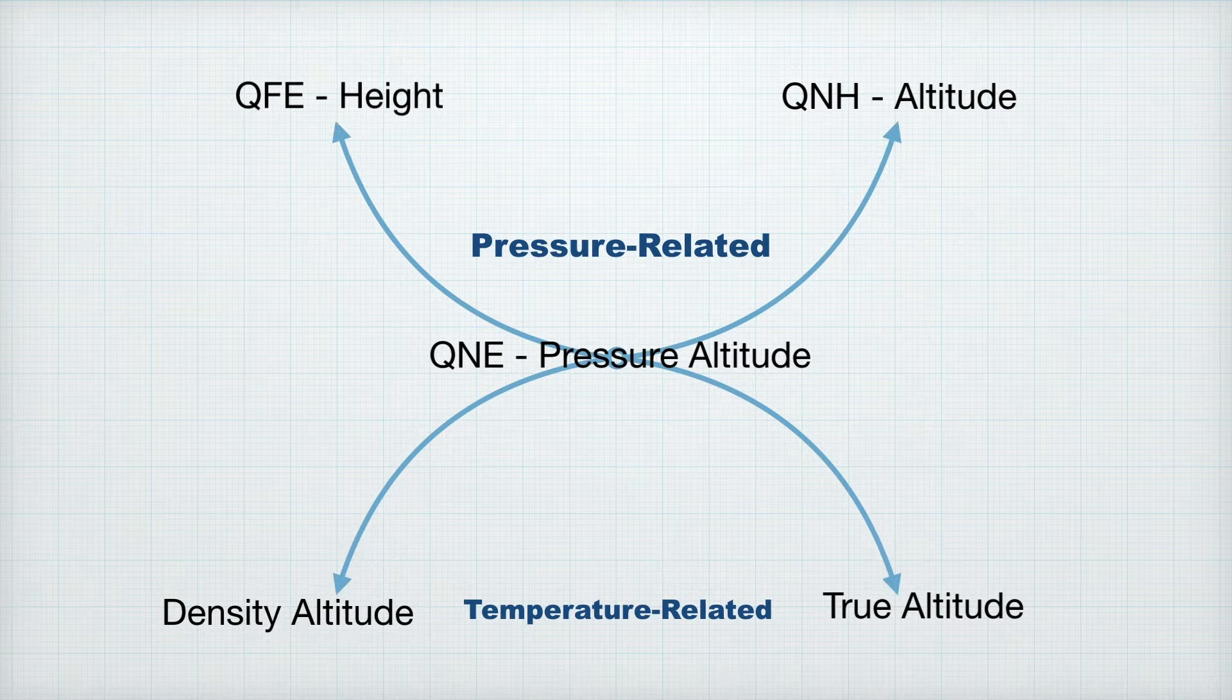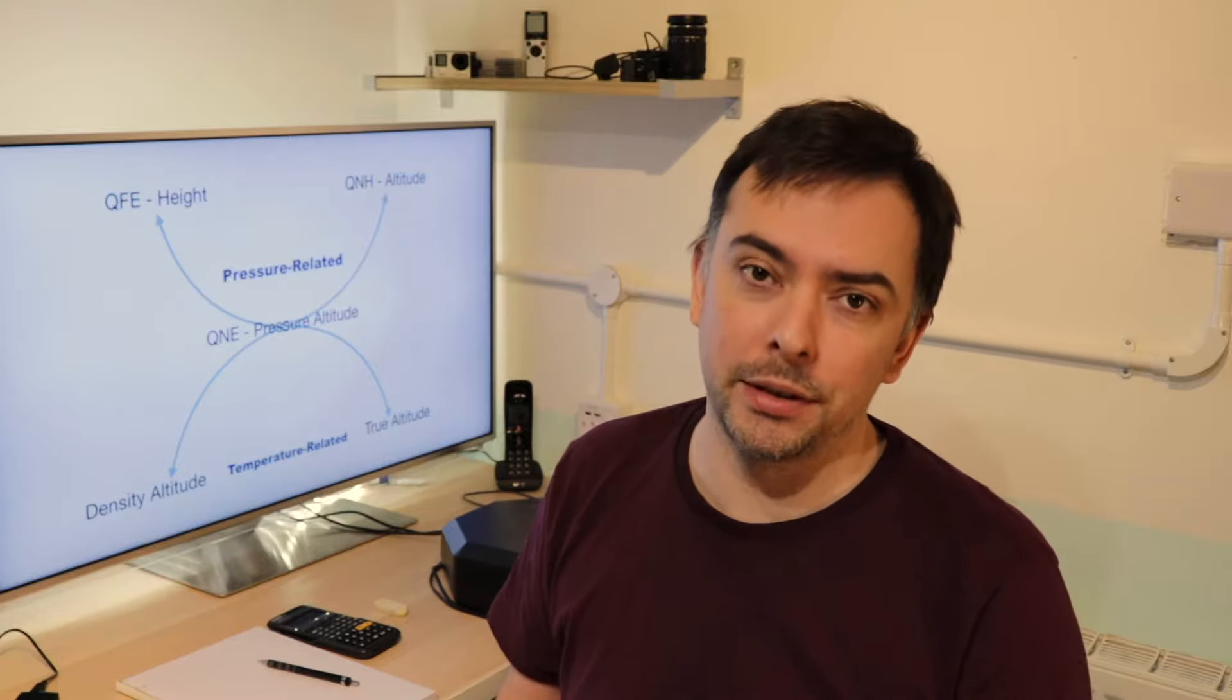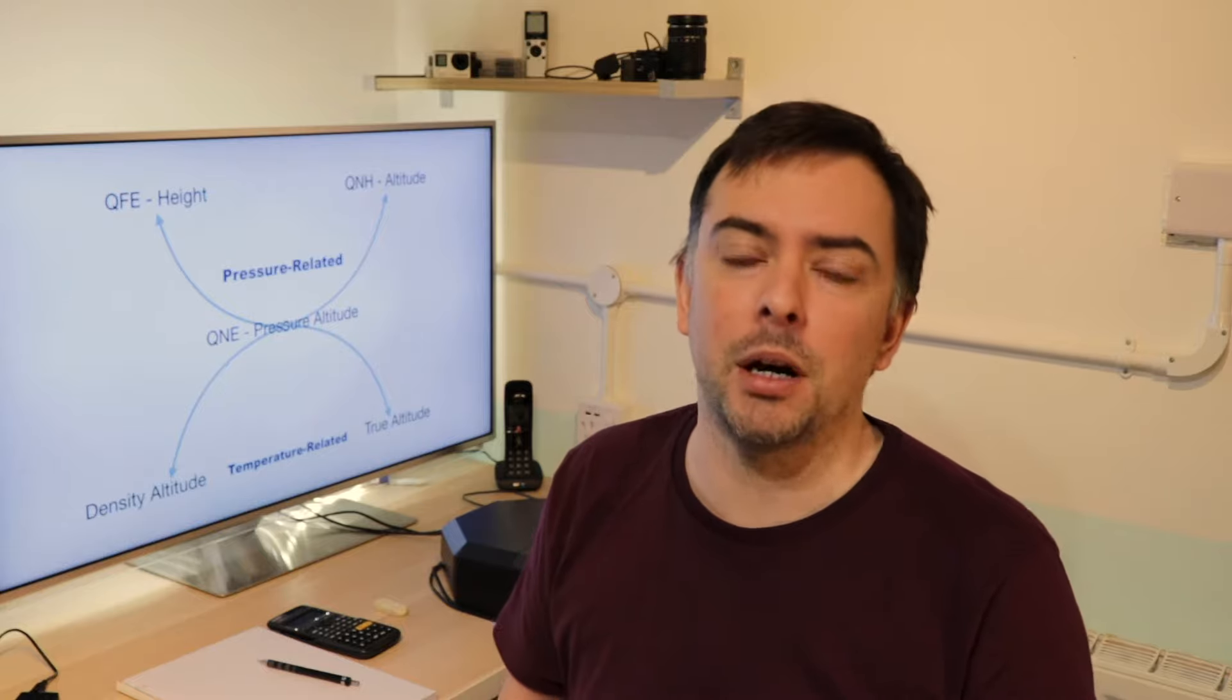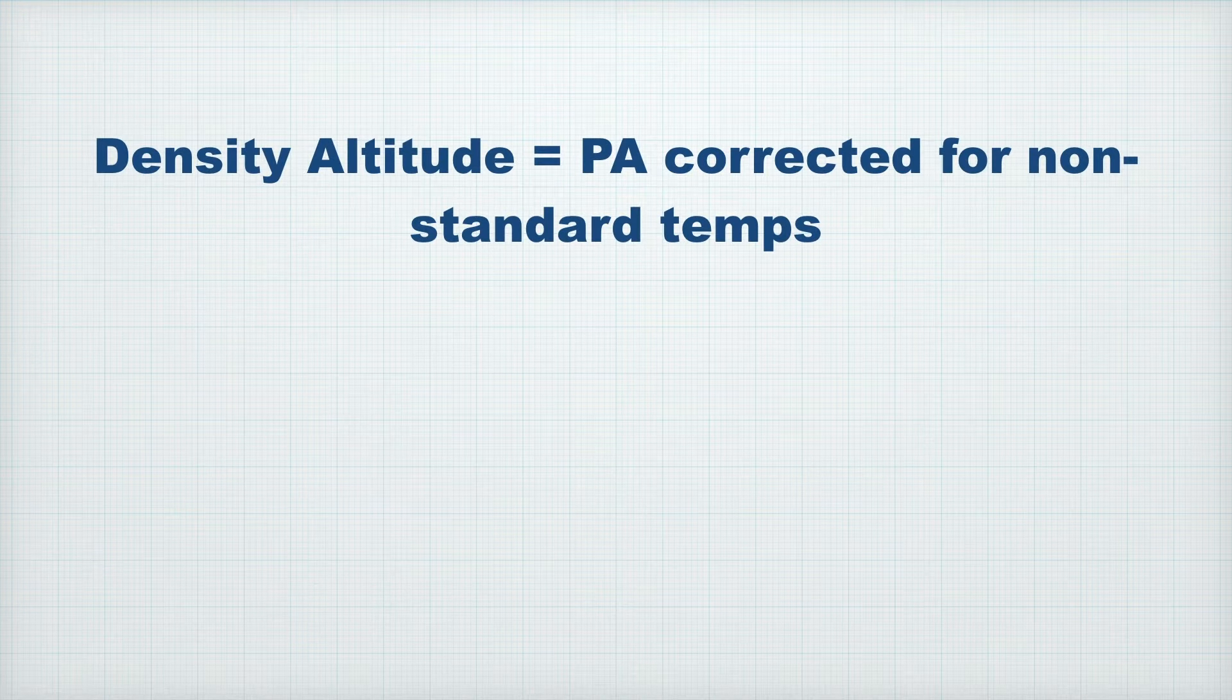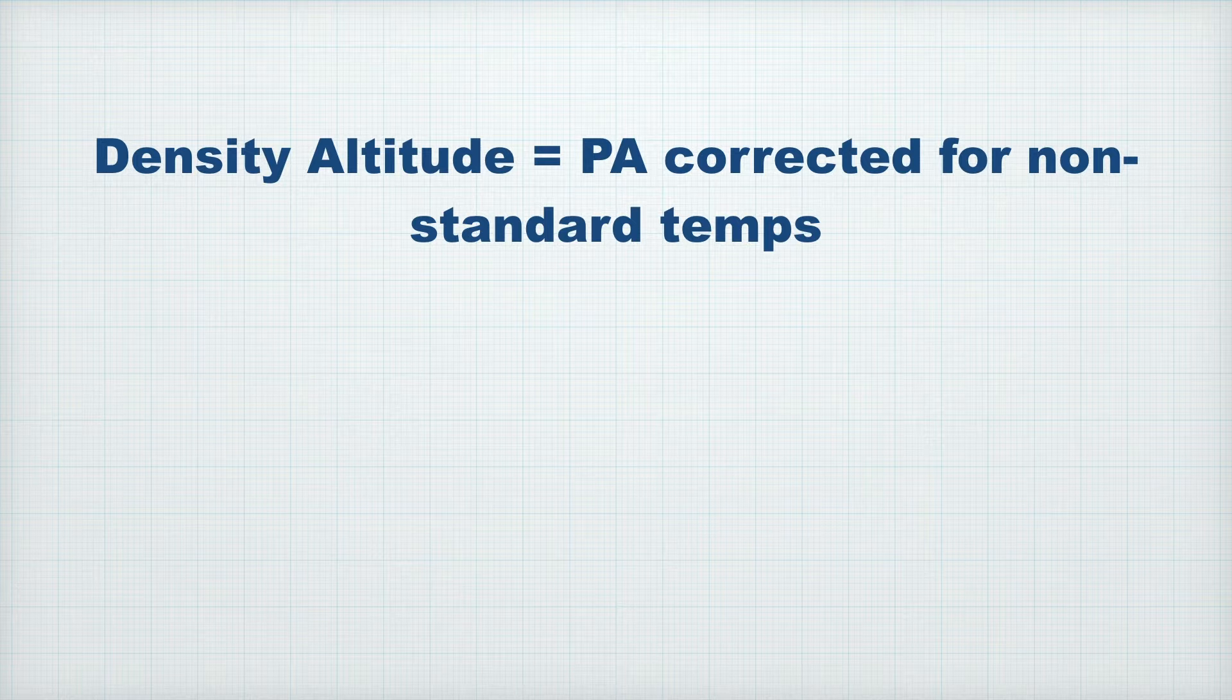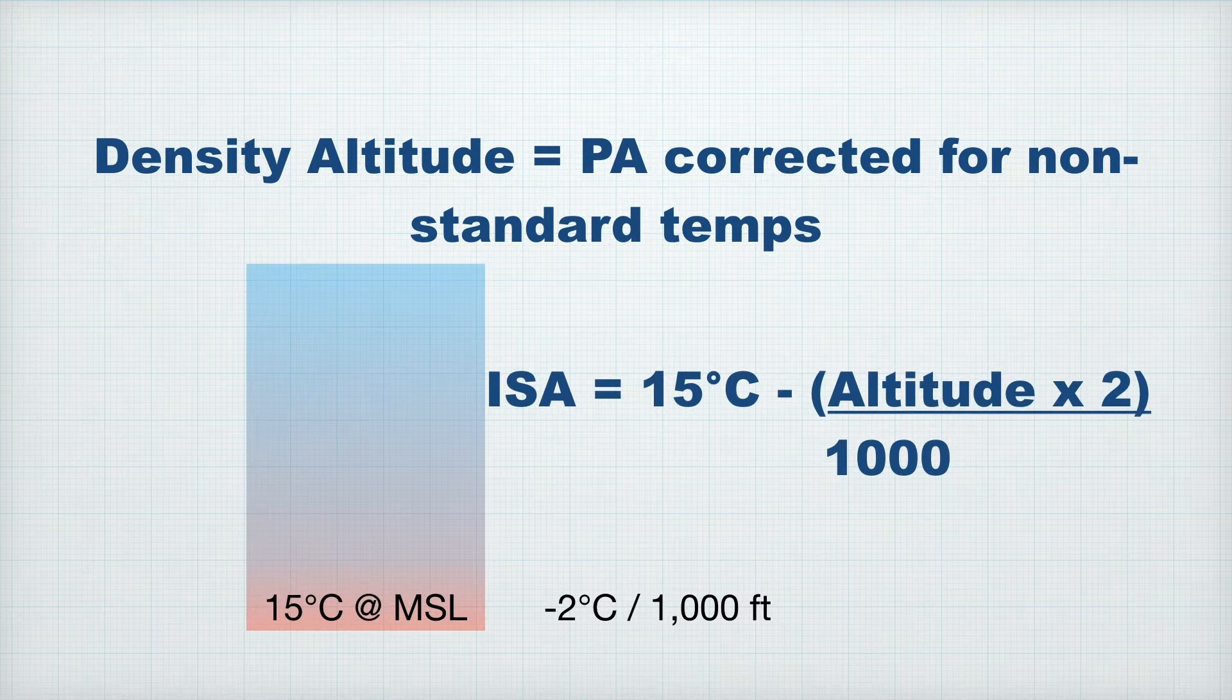Okay, it's formula time again. We're going to take a brief look at density altitude, though we're not going to spend a huge amount of time on it because it doesn't come up nearly as much as true altitude does. So density altitude is pressure altitude corrected for non-standard temperatures. Again, we're referring here to the ISA standard temperature lapse rate of 2 degrees per 1000 feet.